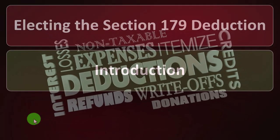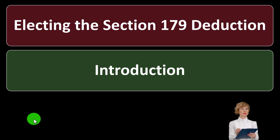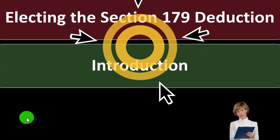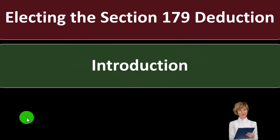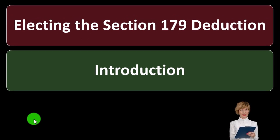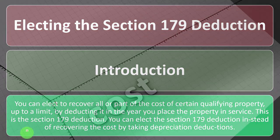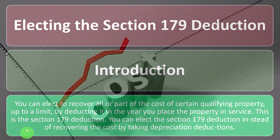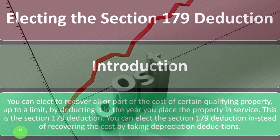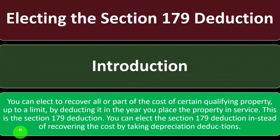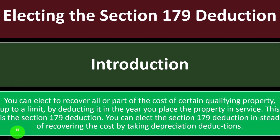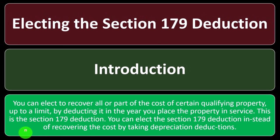That's what we're talking about now — which is basically the Section 179 deduction and possibly a special deduction. These types of items don't make sense from a bookkeeping standpoint, but sometimes make sense from a legal or lawmaking standpoint to try to stimulate the economy. So electing the 179 deduction — just as a recap — you can elect to recover all or part of the cost of certain qualifying property, up to a limit, by deducting it in the year you place the property in service. So we've got this depreciable property; normally we would have to depreciate it, but oftentimes we'd like to get the depreciation in year one, and that's where the 179 deduction may come in. You can elect the Section 179 deduction instead of recovering the cost by taking depreciation deductions.